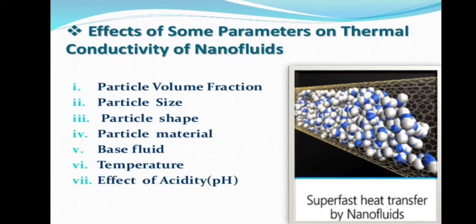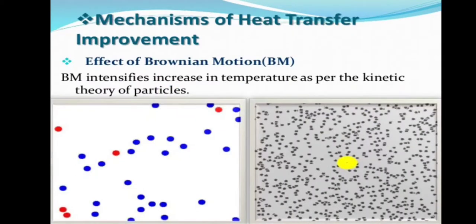The very first value is particle volume fraction, then we have particle size, then we have particle shape, particle material, base fluid, temperature, and then effect of acidity which is pH. These are some parameters on which thermal conductivity of nanofluids really depend. As you saw in the previous slide that we have compound elements as nanoparticles and then we have its base fluid accordingly, so it's really important for these two to match.